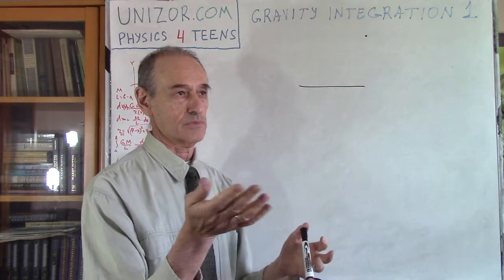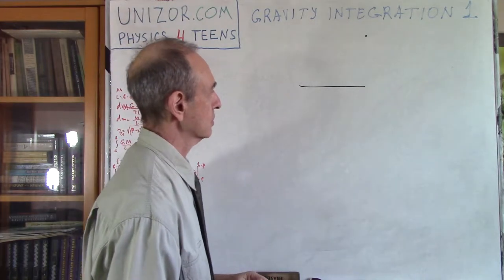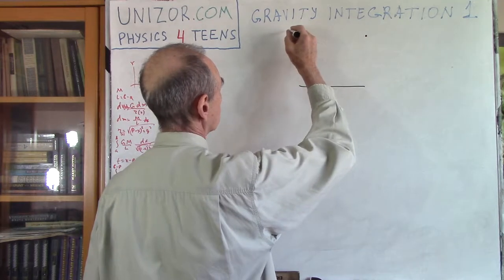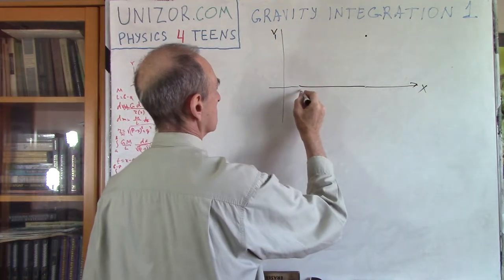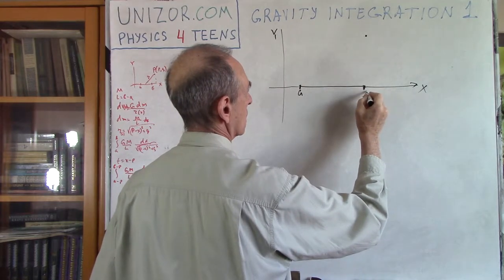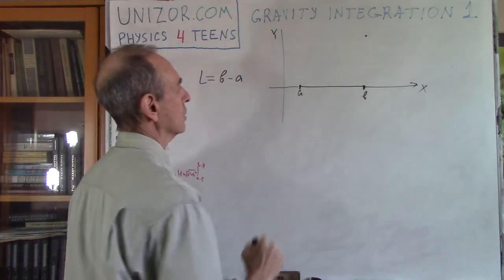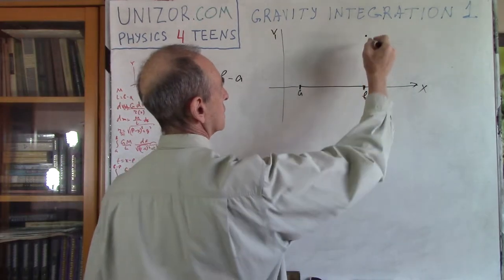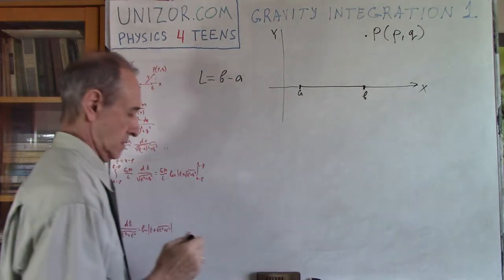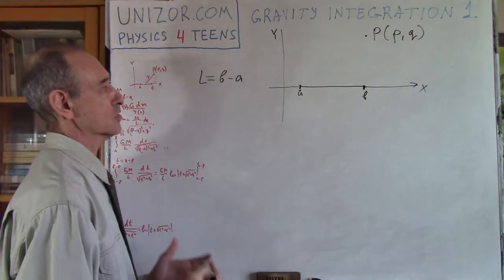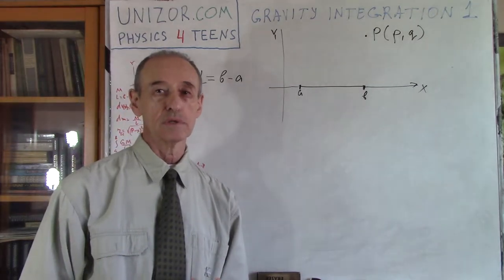The potential at any point in space can actually be determined using the calculations made in this plane, because for any other point we can always set up this plane and calculate the potential. It would be easier if I put the rod along the X-axis from point A to point B. So our rod has length L from A to B, and our point of interest has coordinates P and Q on this plane. I have to find the gravitational potential at this point, given the mass uniformly distributed along the rod.